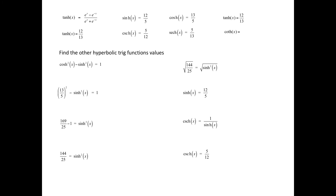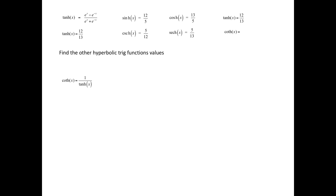We have one value remaining to find: the hyperbolic cotangent of x. The hyperbolic cotangent of x is equal to 1 divided by the hyperbolic tangent of x. We know that the hyperbolic tangent of x is 12 thirteenths, so the hyperbolic cotangent of x is 13 twelfths. Now we have found all of the other hyperbolic trig function values given the value of the hyperbolic tangent function.